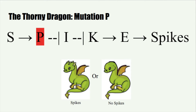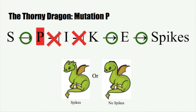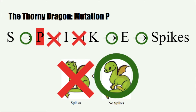Now let's look at some examples of mutations that could change the dragon's spikes. Let's take a look at the outcome if we remove the P gene. I have highlighted the P gene to indicate that it has been removed. Now we can see where the green O's and the red X's are to represent the activation and inhibition of the genes. Without the P gene, I is not inhibited, which then allows I to block K. Therefore, without K, E is blocked, which means that this mutant will not have spikes. This could be a reason why Brad does not have spikes.